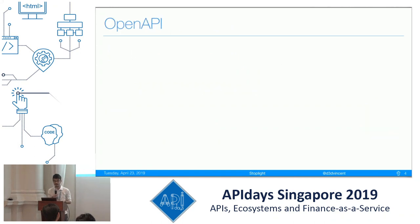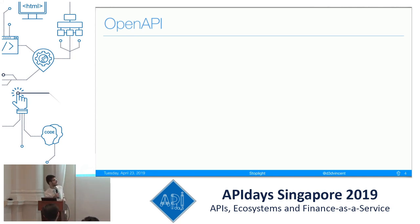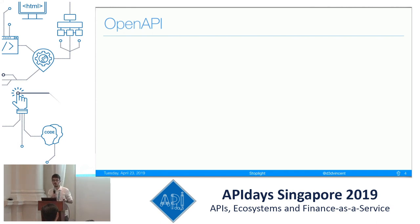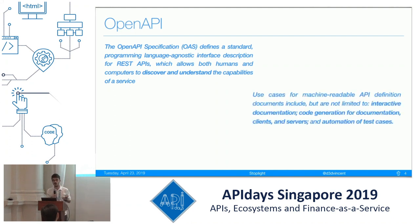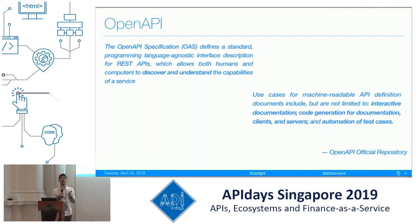Let's jump straight to the content. Who here is a developer? I guess everybody. I'm quite sure you're familiar with OpenAPI. Most of the time, the conception you have about OpenAPI is that it defines the standards which allow humans and computers to discover and understand the capabilities of a system. Or also, what you find on the web is it's something to make interactive documentation, code generation, server stubs, and test cases — and this is coming from the official OpenAPI repository.